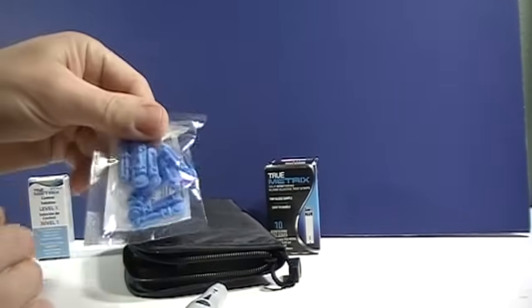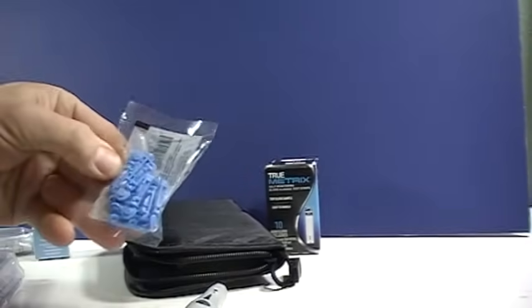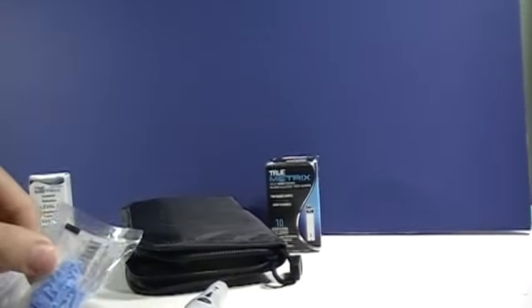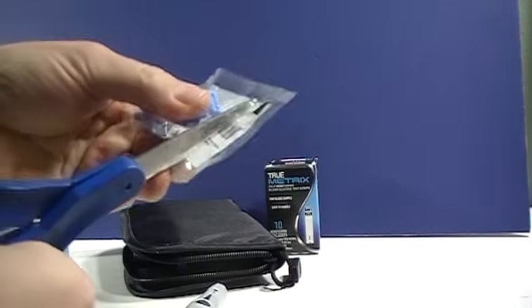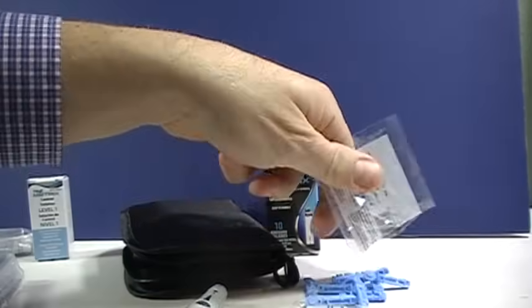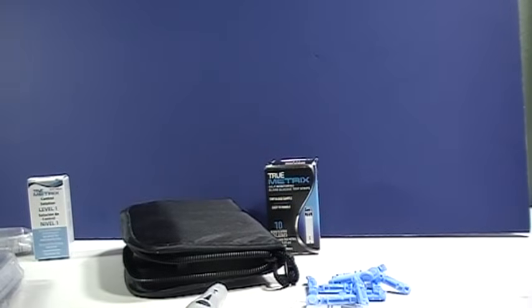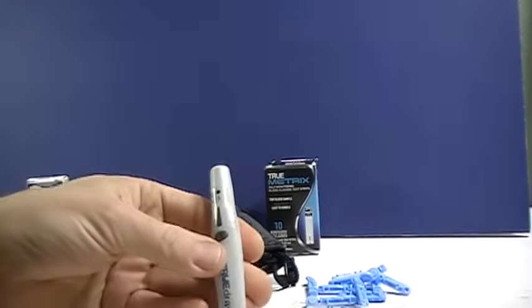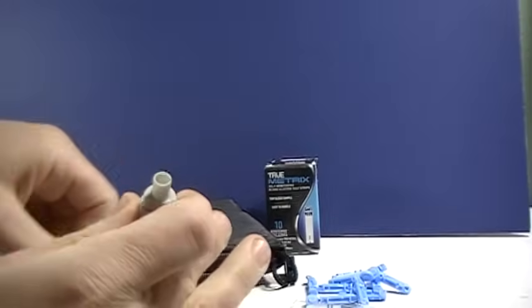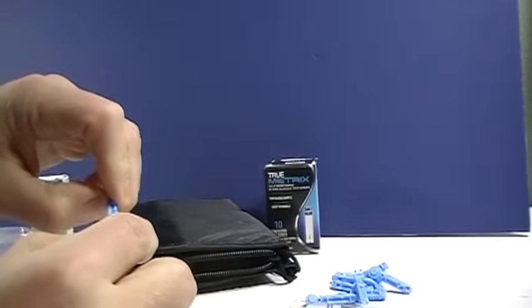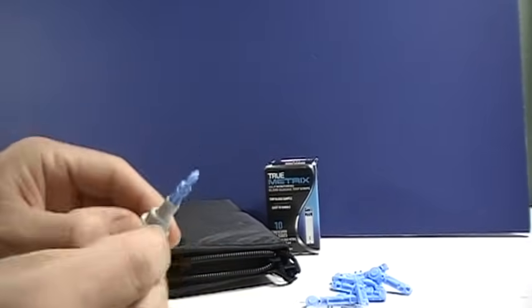These are the lancets. That's what you put in the lancet device to draw the blood. So first we can go over how to load the lancet device. Just remove the lid, put in one of the lancets.